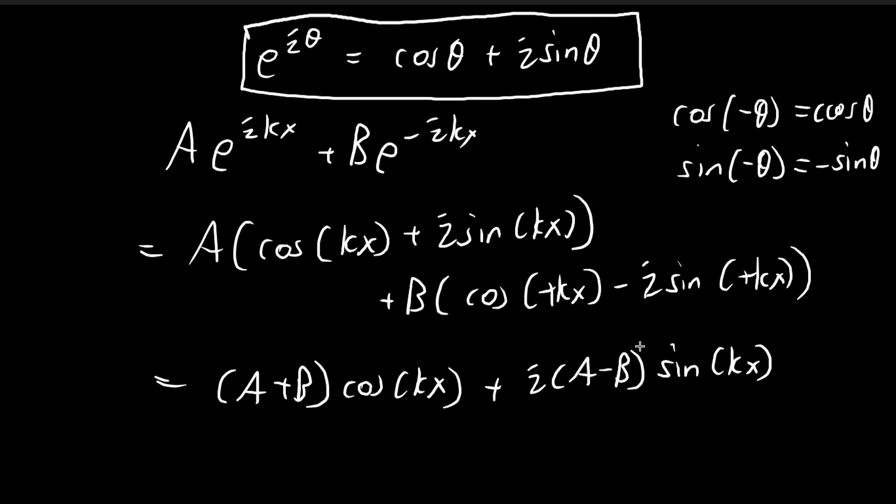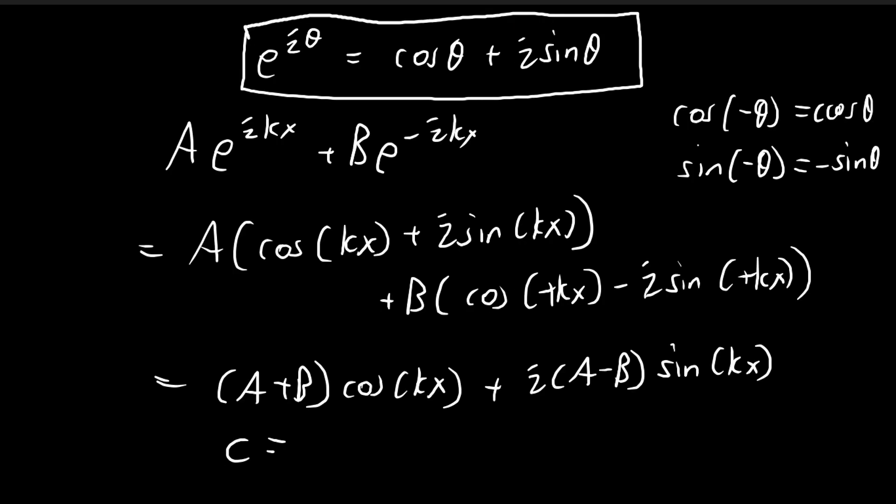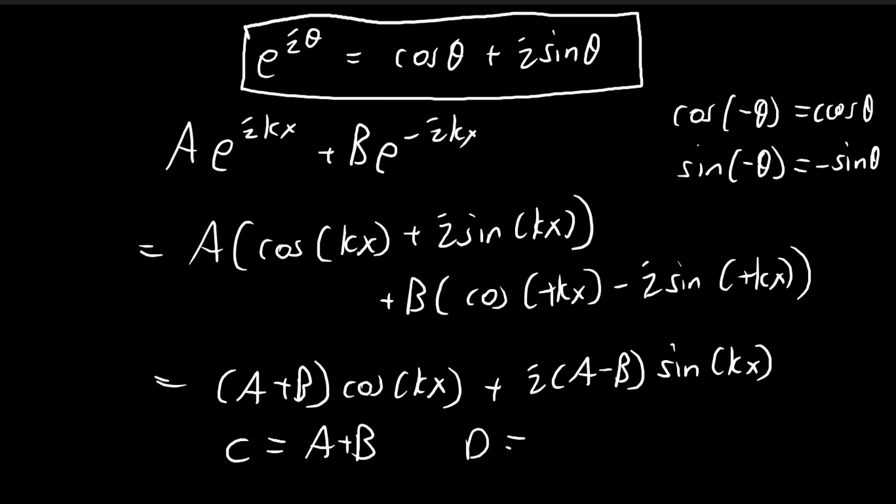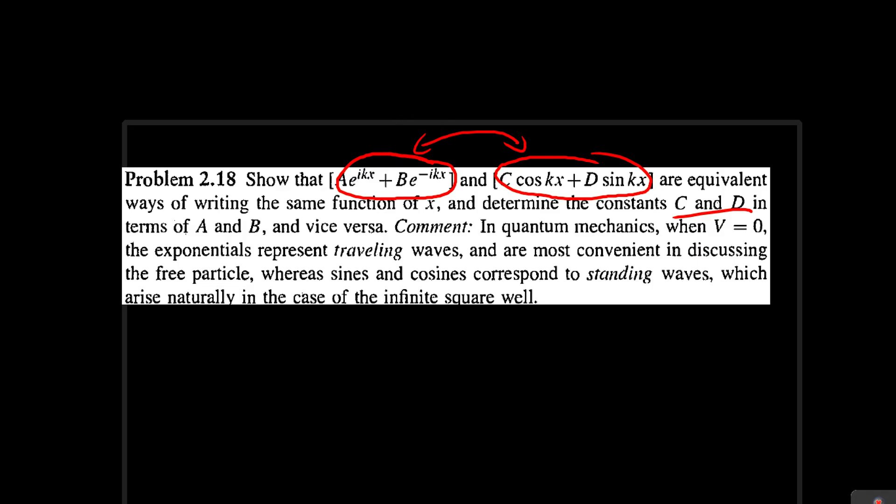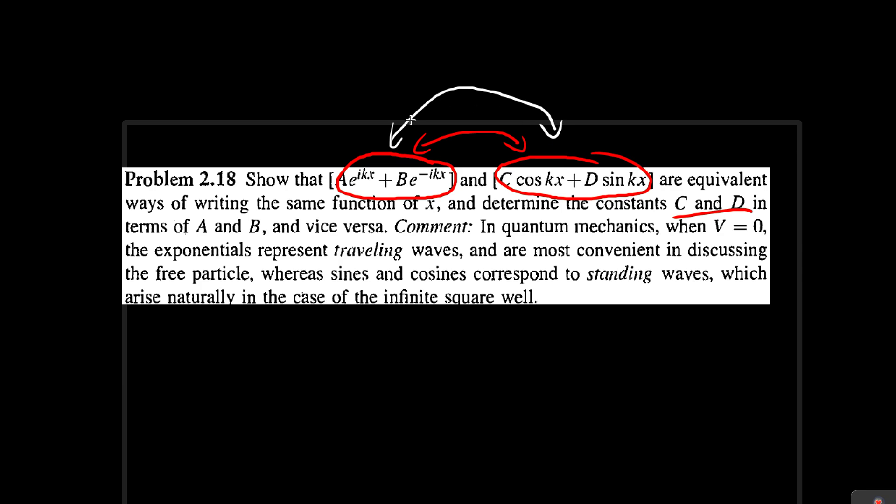If you compare this term over here with this expression over here, you can see that c is equal to a plus b, and then d, the term that's stuck to the sine term, is equal to i times a minus b. So if we define c and d in such a way, then these two expressions will be equivalent. We have solved our problem, finding the conditions for c and d such that these two expressions are equivalent.